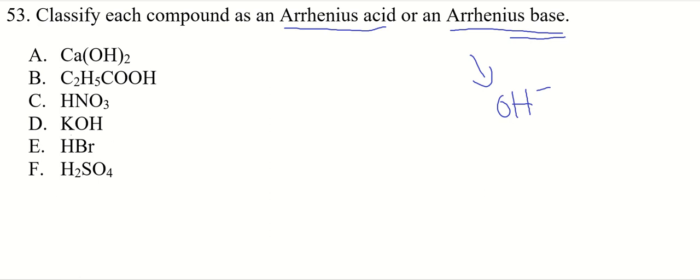These are typically your group 1 metal compounds with hydroxide in it. So D is an Arrhenius base. It's potassium hydroxide. And A has a group 2 metal there, calcium, and calcium hydroxide. So that's also a base.